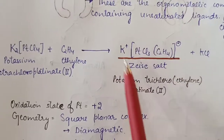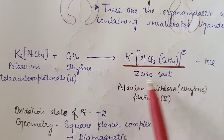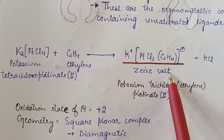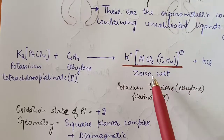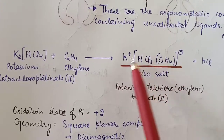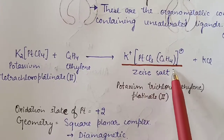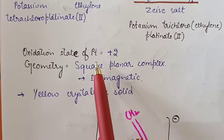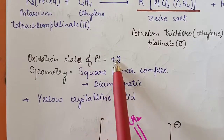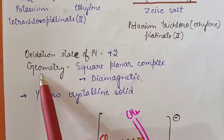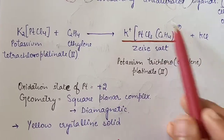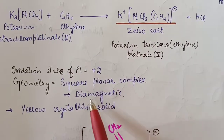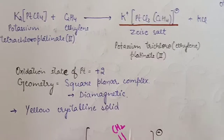Zeise's salt is a pale yellow crystalline solid. The oxidation state of platinum in this salt is +2. The geometry of the complex is square planar and it is diamagnetic in nature.